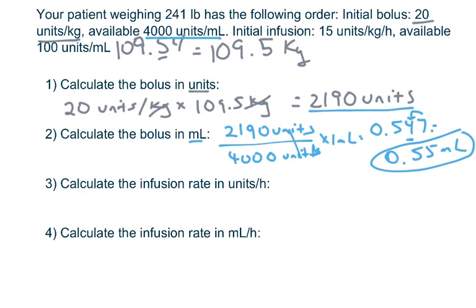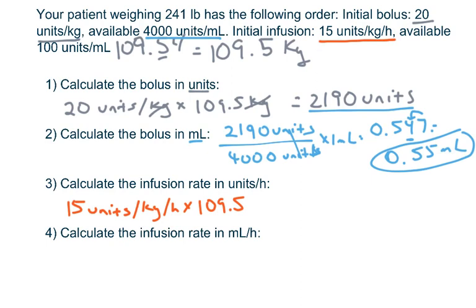The bolus has been given, so now set up the IV. For the infusion, he's getting 15 units per kilogram per hour. Multiply by his weight: 15 times 109.5 kilograms. Kilograms cancel, giving 1,642.5 units per hour. We do not round this.